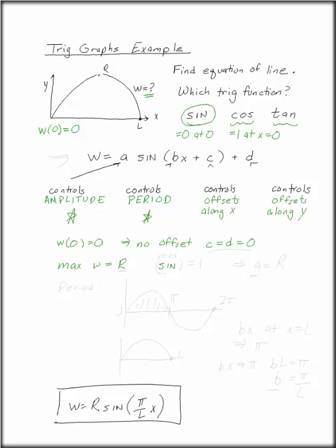so we need to make the maximum equal to R, we multiply everything by capital R. So a is R.